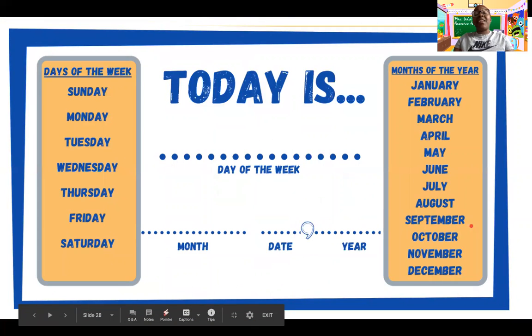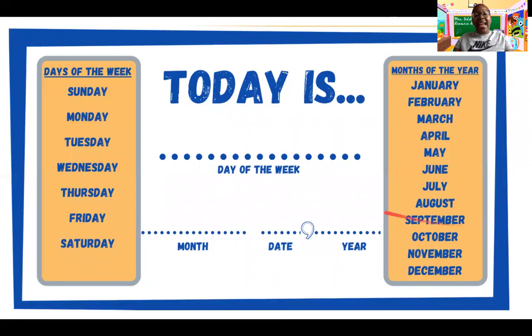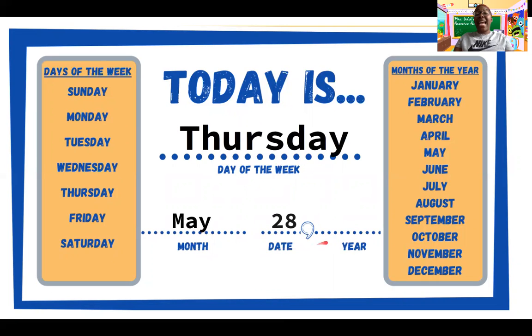Let's say our date together. Remember, when we say our date, we start with the day of the week and then we say the month, the number date, and then the year. Today is Thursday, May 28th, 2020. Let's say it together one more time. Today is Thursday, May 28th, 2020. Great job.